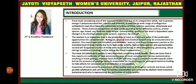The abattoir is an important step in the production of meat as it presents some of the preferable opportunities for contamination. Biological, physical and chemical hazards may be encountered at an abattoir. The most important microbial contamination sources arise from endogenous sources, as the microbial load of meat is mainly due to its high water activity, high protein content and approximately neutral pH. Exogenous sources of meat contamination occur during or after slaughtering processes and abused storage conditions, including during meat transportation.